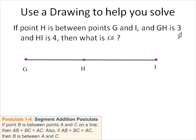And GH is 3, so the distance between G and H is 3. We can label that up there as well. And HI is 4, so the distance between H and I is 4. Then what is GI?